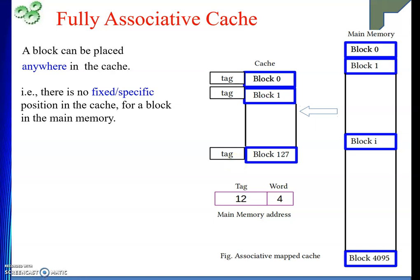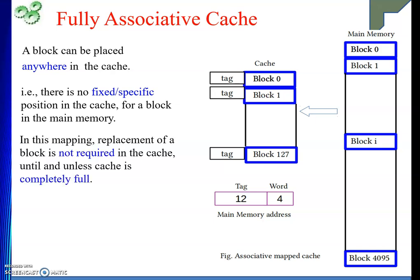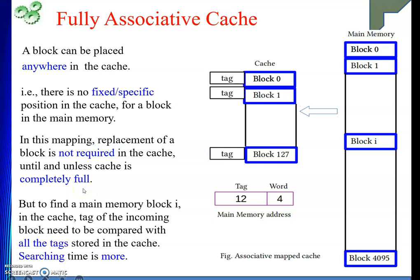Because there is no fixed position for a block in the cache memory, anyone can take any position in the cache. So until and unless it is completely full, we need not have to send any block of the cache into main memory for making room for an incoming block. That means no replacement is required until and unless cache is completely full. So replacement of a block is not required in the cache until and unless the cache is completely full. This is the advantage of associative cache.